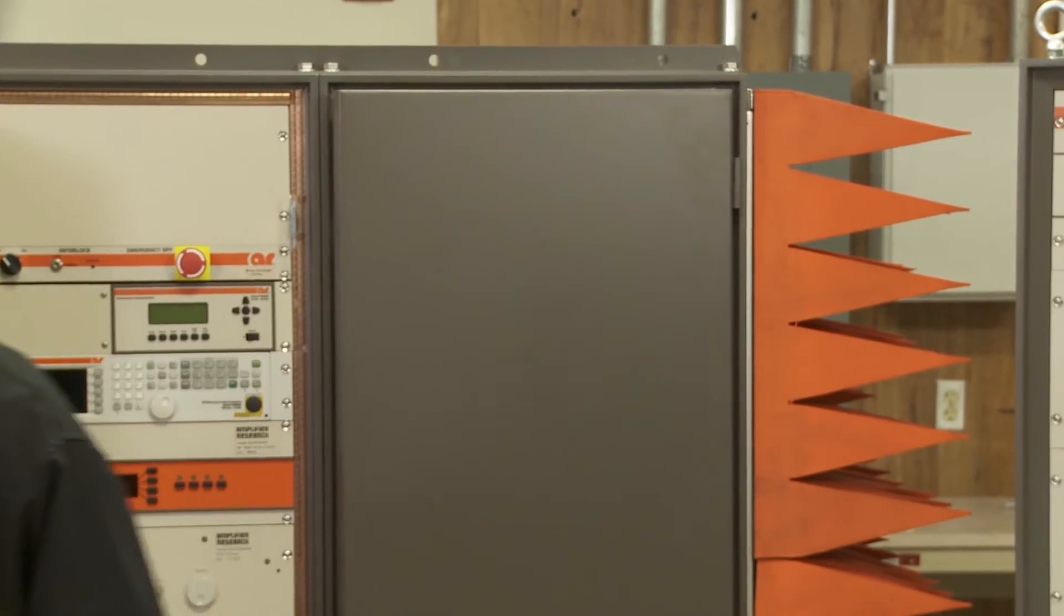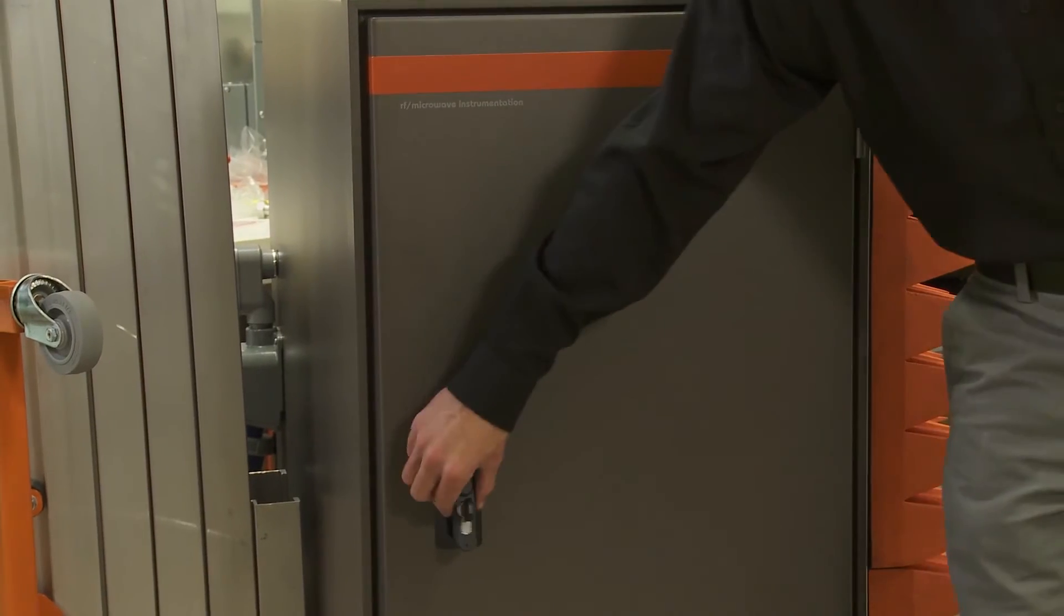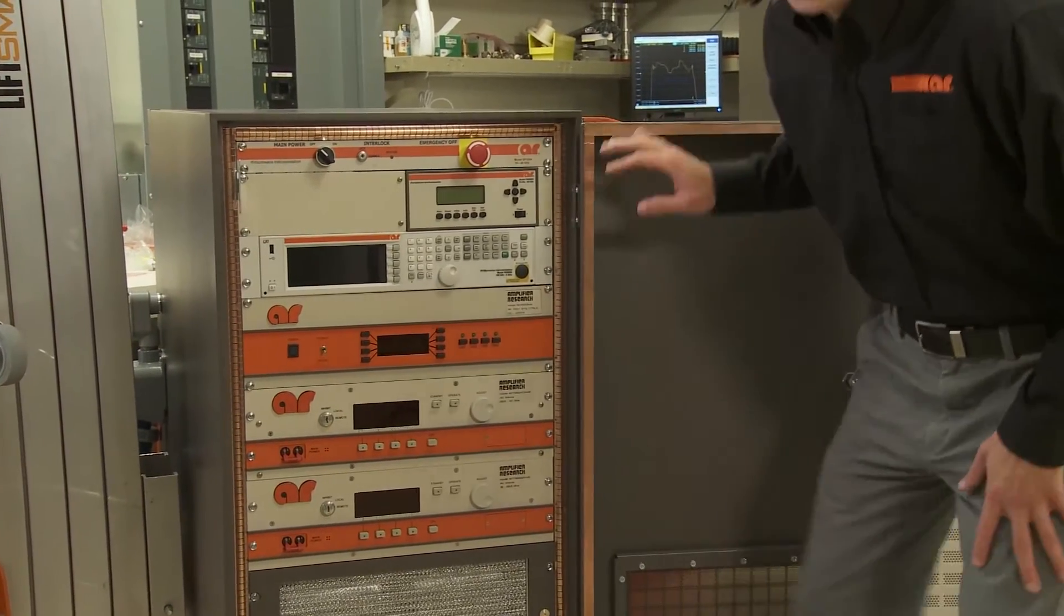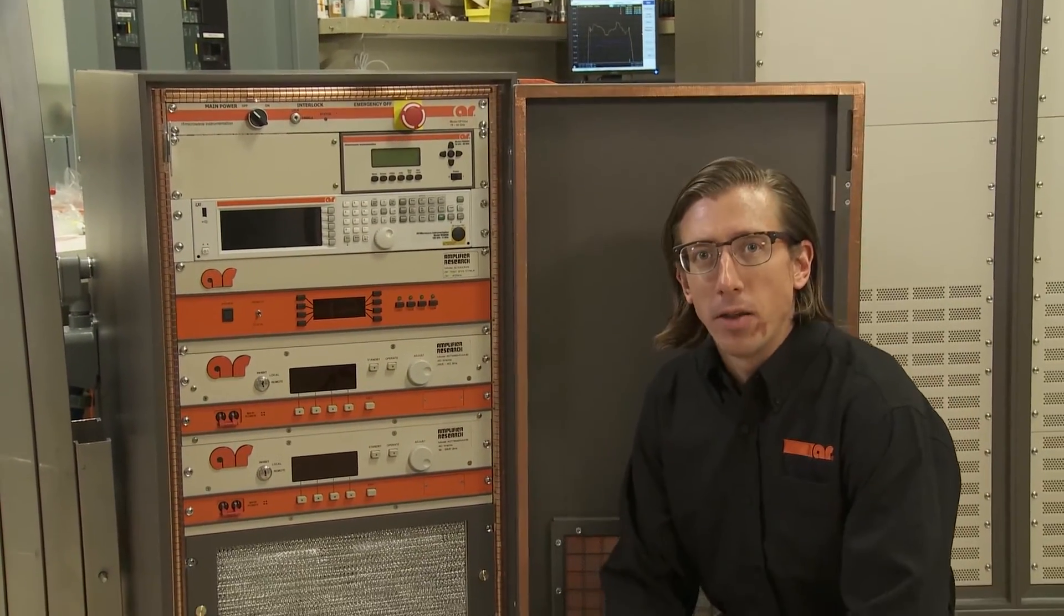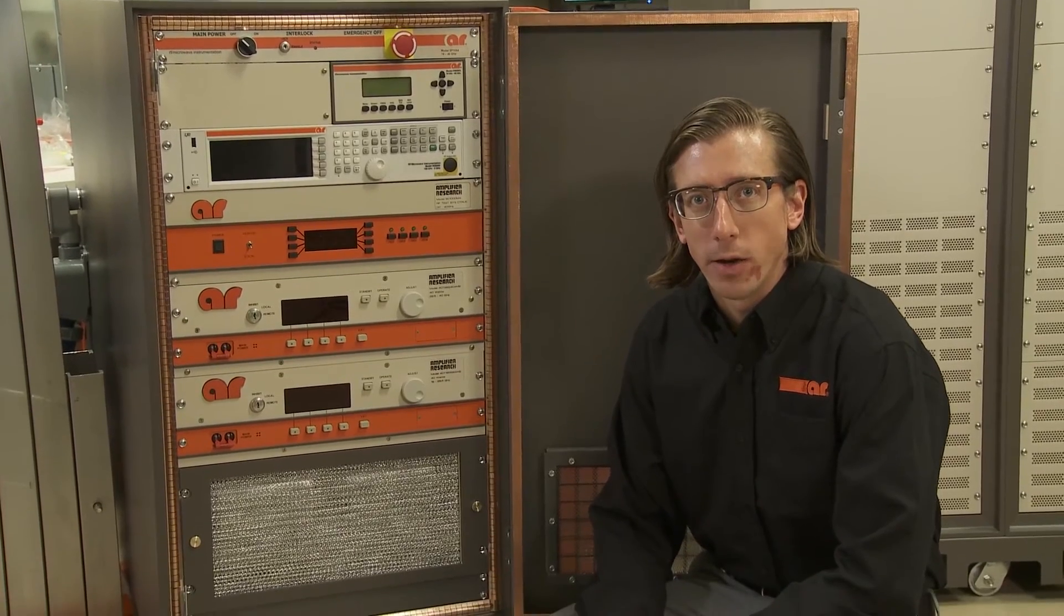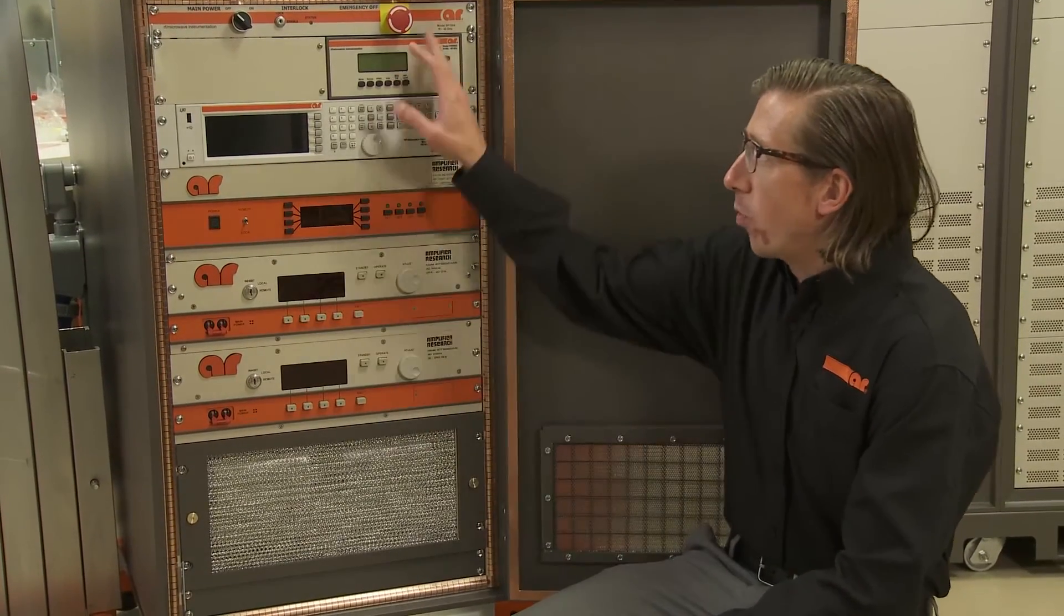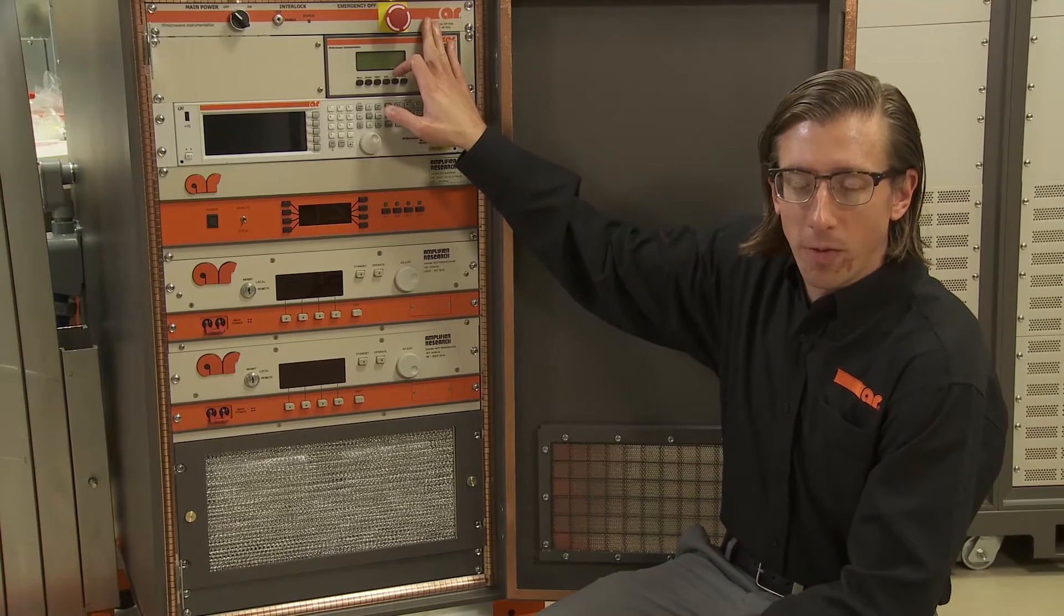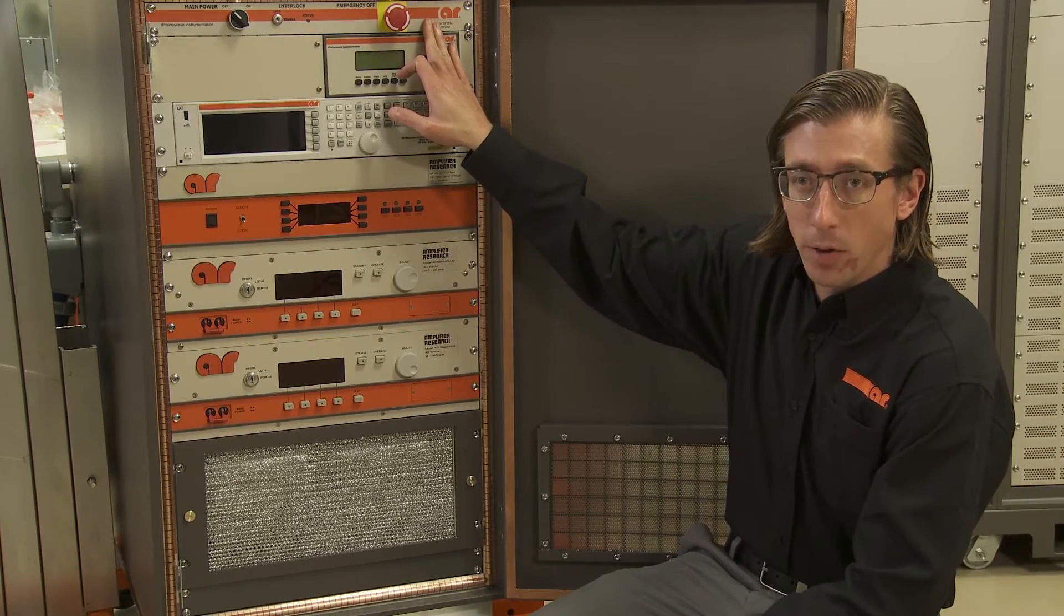Moving on to the last piece of the system, we have a system designed for 18 gigahertz to 40 gigahertz. The 18 to 40 gigahertz system is designed similarly to the 1 to 18 gigahertz system. We have a system interlock, again providing a single switch for providing all power to each of the amplifiers and components.